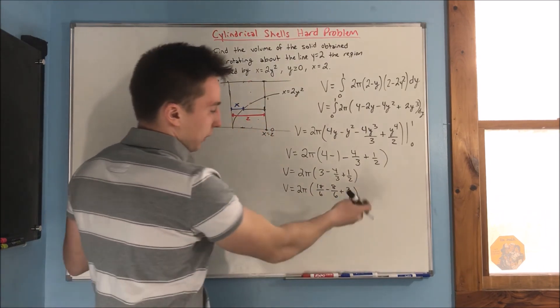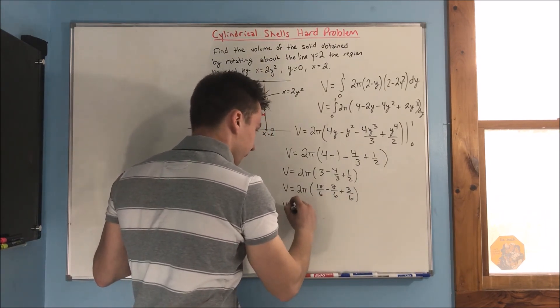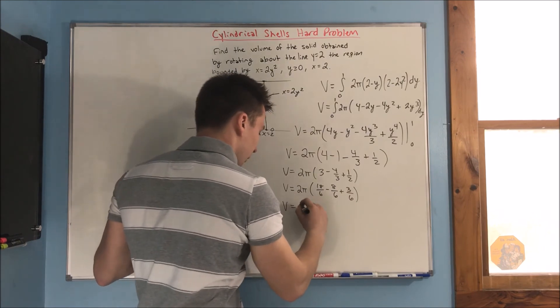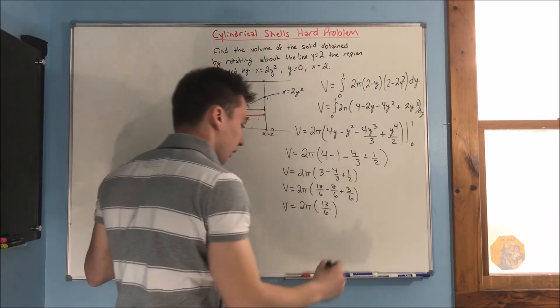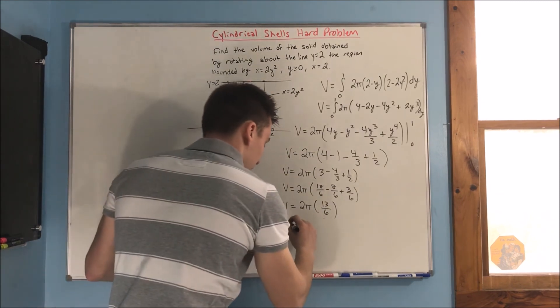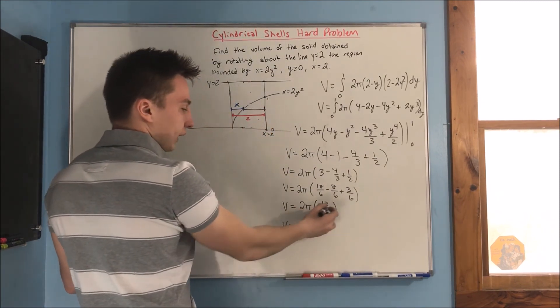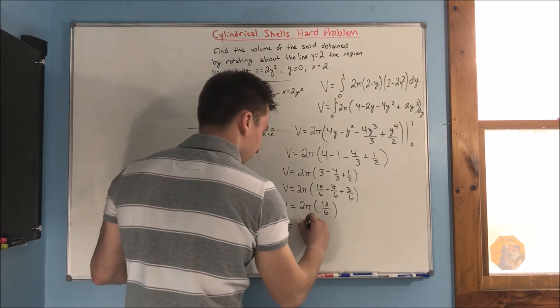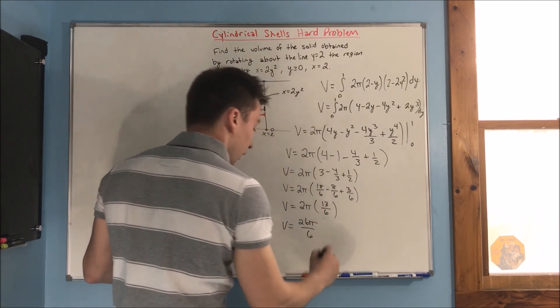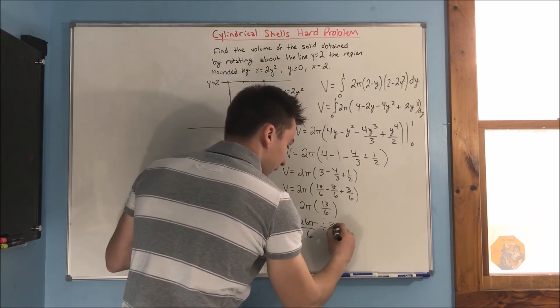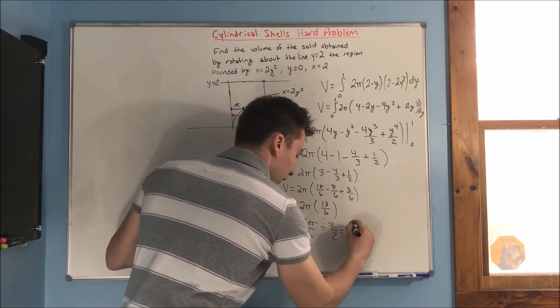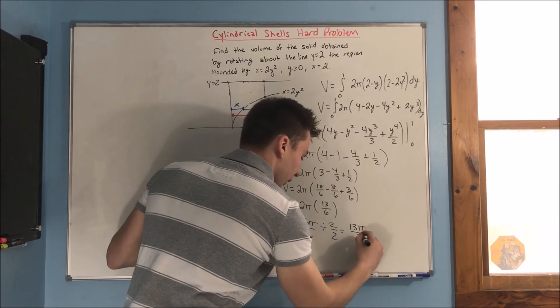And, we're going to get 13 over 6 there. So, 2 pi times 13 over 6. And, we're going to get a 26 pi over 6. Alright? And, we can simplify that by dividing by 2 halves to get 13 pi over 3.